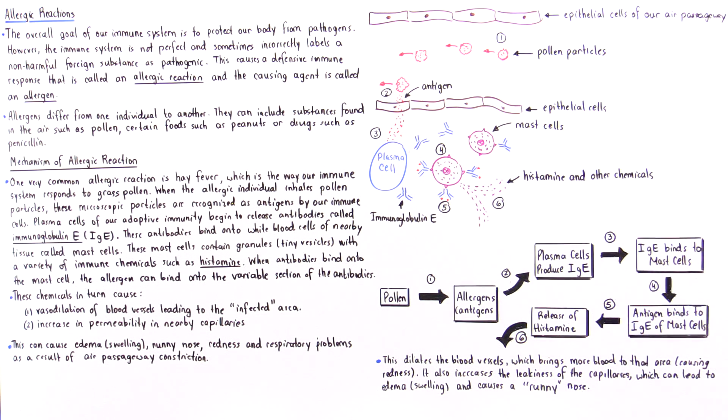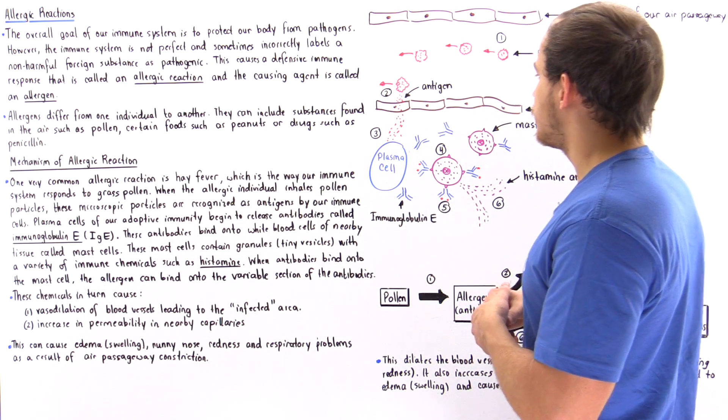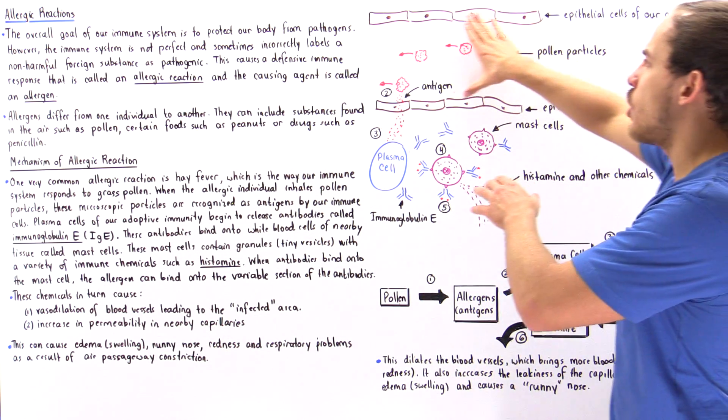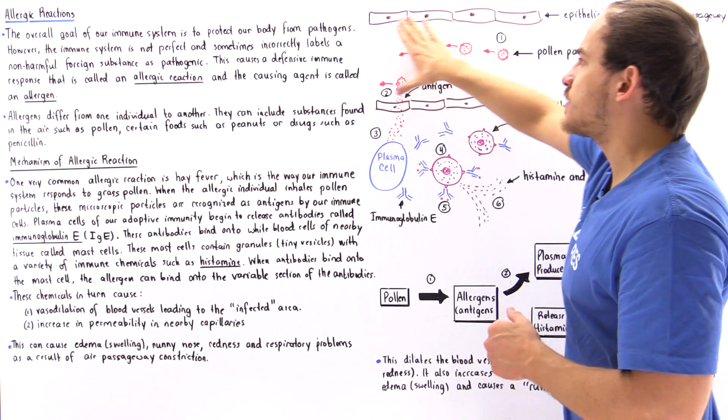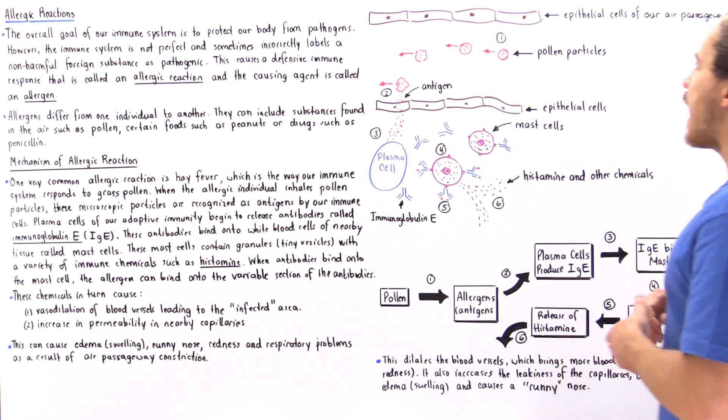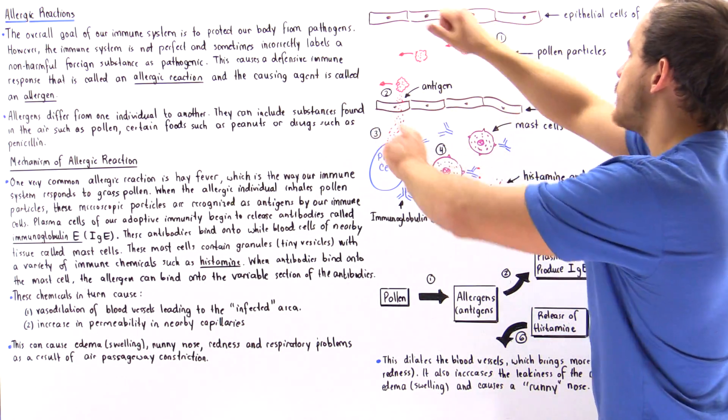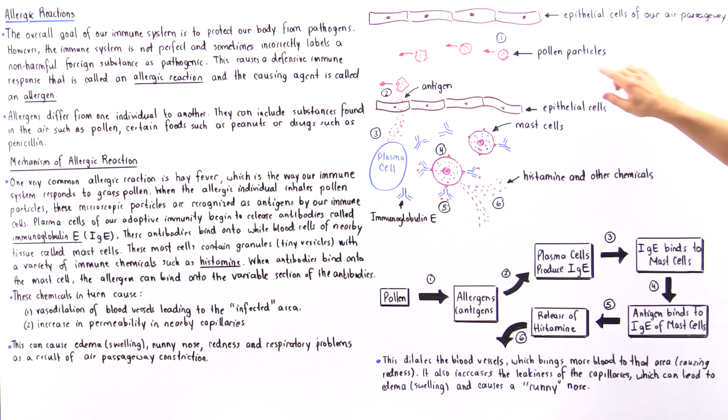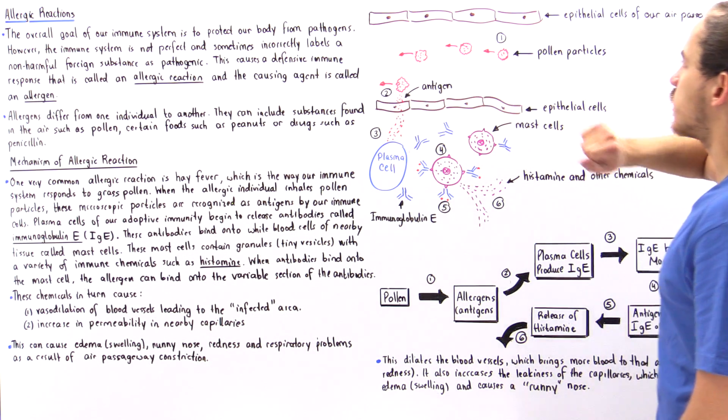Let's take a look at the following diagram to illustrate how our mechanism is actually carried out. So let's suppose this is the air passageway, the bronchial of our lungs. These are the epithelial cells as shown and these are the microscopic pollen particles.